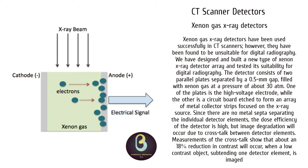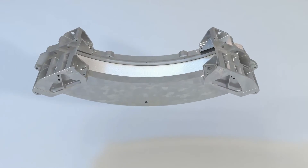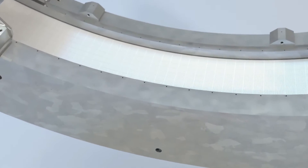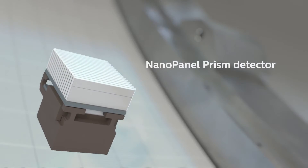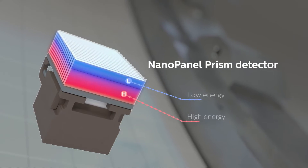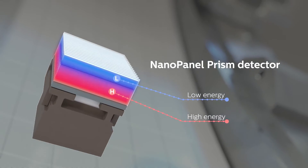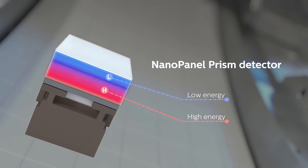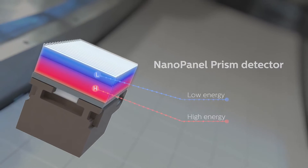First is a xenon gas detector. Pressurized xenon gas fills a hollow chamber to produce detectors that absorb approximately 60 to 87 percent of the photons that reach them. Xenon gas is used because of its ability to remain stable under pressure. It is significantly less expensive compared with the solid-state variety, easier to calibrate, and highly stable. A xenon detector channel consists of three tungsten plates. When a photon enters the channel, it ionizes the xenon gas.